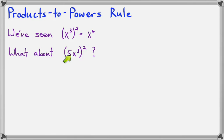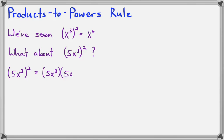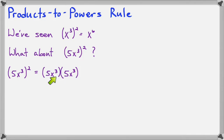Before we learn the products to powers rule, let's actually just work the problem out. We know that 5x to the third squared would be 5x to the third times 5x to the third. We know that 5 times 5 is 25, and x to the third times x to the third is x to the sixth.